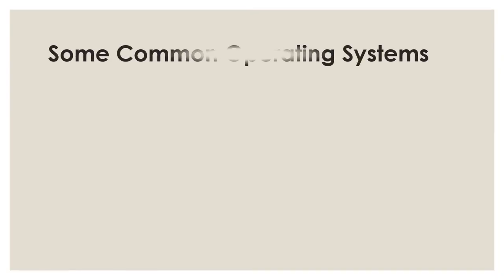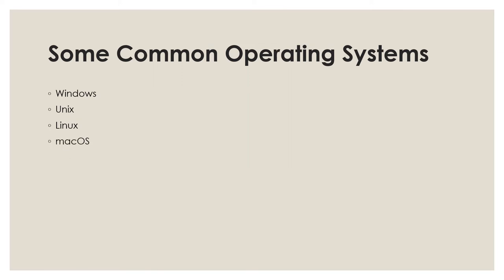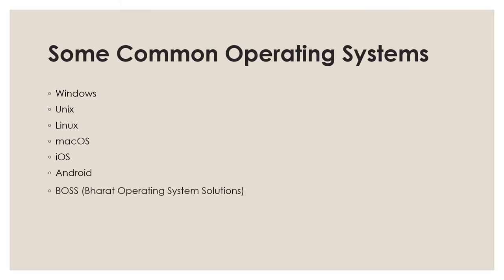Some examples of operating systems are Windows, Unix, Linux, Mac OS X, iOS — which stands for iPhone Operating System — Android, and finally BOSS, that is Bharat Operating System Solutions. These are some of the examples of operating systems.